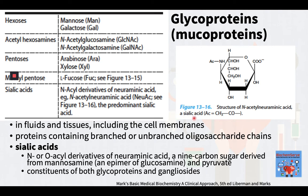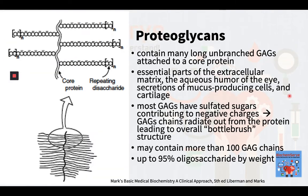The sialic acids are N- or O-acyl derivatives of neuraminic acid, as shown in the figure at the right. Neuraminic acid is a 9-carbon sugar derived from mannosamine — an epimer of glucosamine — and pyruvate. Sialic acids are constituents of both glycoproteins and gangliosides. Proteoglycans contain many long unbranched glycosaminoglycans or GAGs attached to a core protein, and are essential parts of the extracellular matrix, the aqueous humor of the eye, secretions of mucus-producing cells, and cartilage.